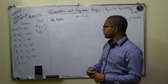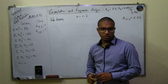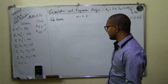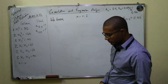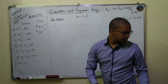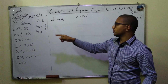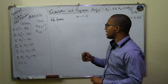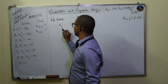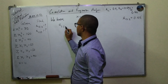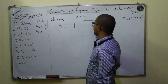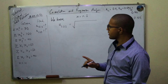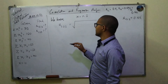Since we have already computed the partial correlation, the answer is okay. Now let's compute the multiple correlation R1.23 — the combined effect of second and third variables on the first variable.